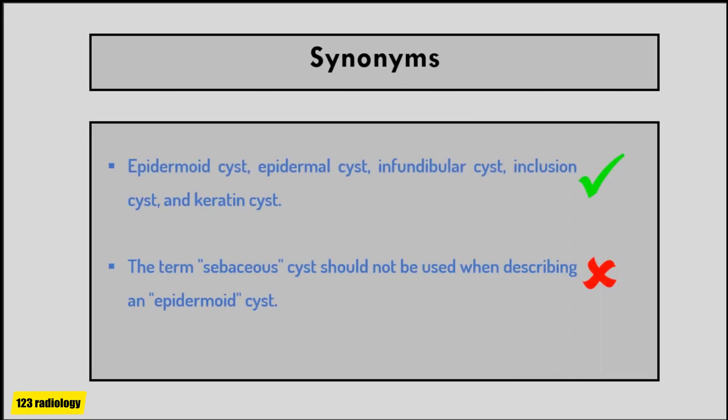Numerous synonyms for epidermal inclusion cysts exist, including epidermoid cyst, epidermal cyst, infundibular cyst, inclusion cyst, and keratin cyst. The center of epidermoid cyst almost always contains keratin and not sebum; they also do not originate from sebaceous glands. Therefore, epidermal inclusion cysts are not sebaceous cysts, and the term sebaceous cyst should not be used when describing an epidermoid cyst.